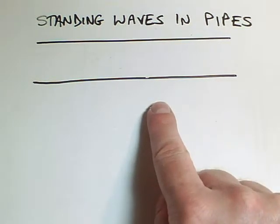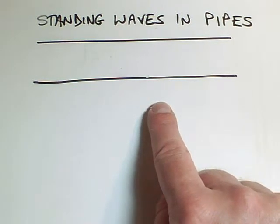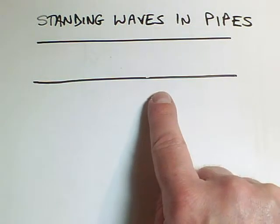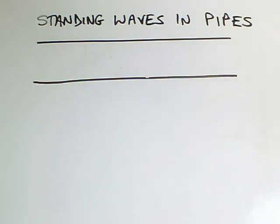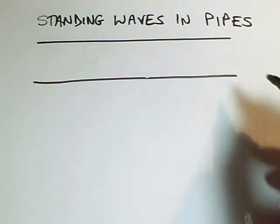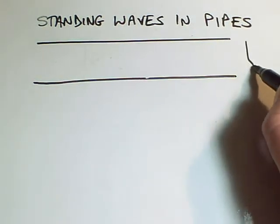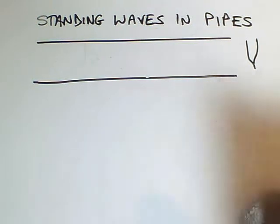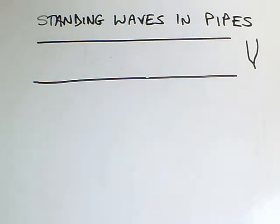We know from things like recorders and flutes and clarinets that you can make pipes make noises if you just get the air inside them to vibrate, which you could do by maybe blowing across the right kind of hole for a musical instrument. Or in experiments we do, we might hold a tuning fork near the end of the pipe and get the air to vibrate. Or we've seen some tubes that you can just give them a whack and that will make them sound a note.